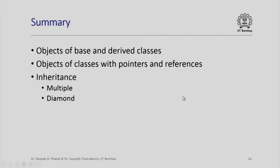In summary, in this lecture we saw the relation between objects of base classes and derived classes and how to do assignments among them. We also saw how to do assignments to pointers and references of base and derived classes. Finally, we saw two interesting modes of inheritance: multiple inheritance and diamond inheritance, and how these can be used correctly. Thank you for your attention.